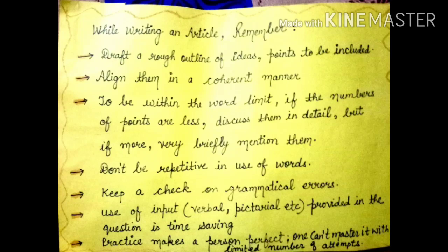The fifth point is to keep a check on grammatical errors. Whatever you are writing, check carefully, and if there is any grammatical mistake, correct it. The next point is the use of input — whether verbal or pictorial — as provided in the question. Both are time-saving, so you can use either or both.